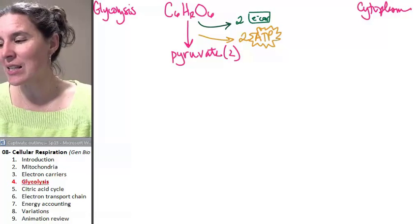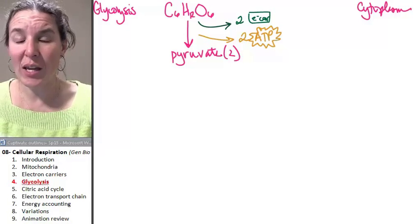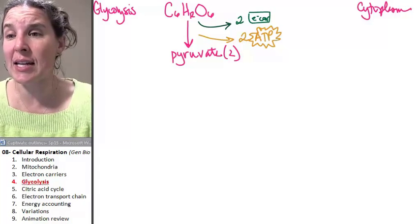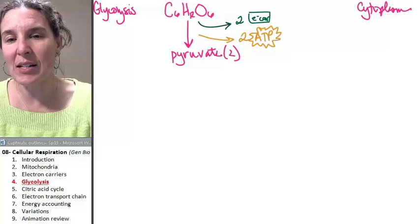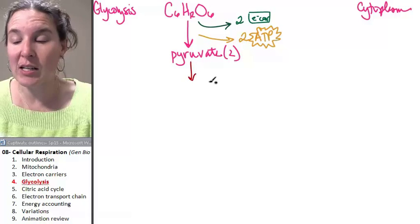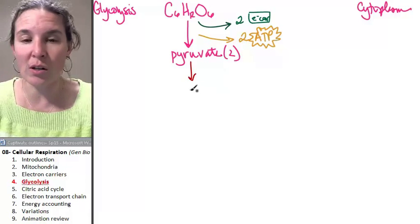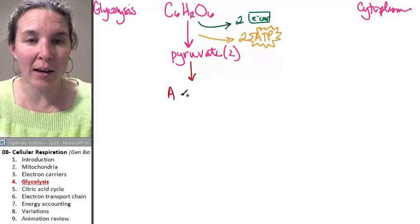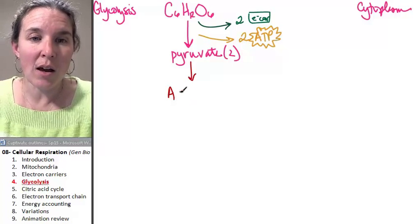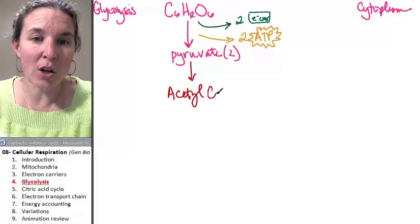Pyruvate is not the end game. Pyruvate by itself can't move on to the next stage, so we have to go through a process of fixing pyruvate. We're going to turn pyruvate into a molecule called acetyl-CoA.